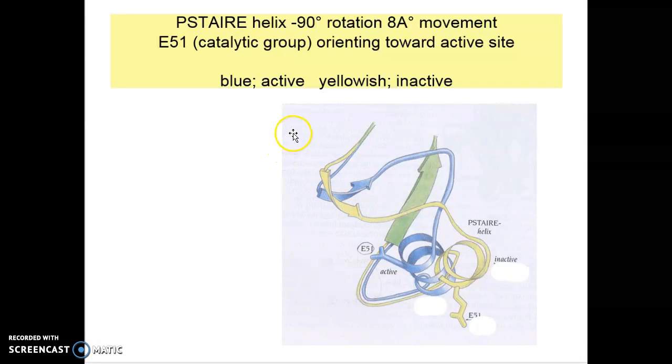We are looking at the PSTAIRE helix in two states: the inactive form in yellow and active form in blue. They are overlapped to show how much they are different in their conformations. This PSTAIRE helix just flips by 90 degrees and some movement by 8 angstroms, especially the catalytic group in E51 flips from here to this side where active sites are actually positioned.